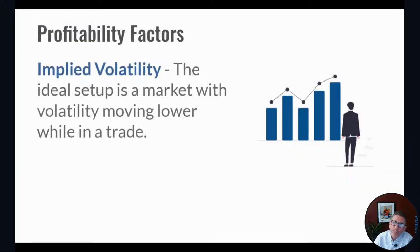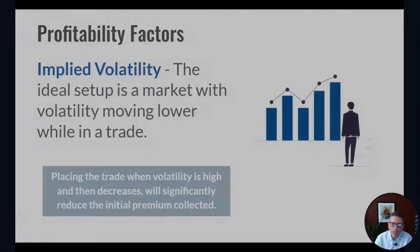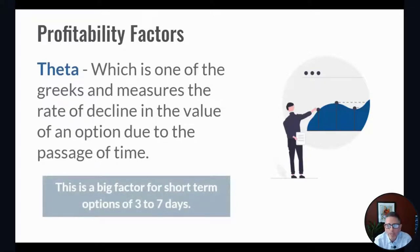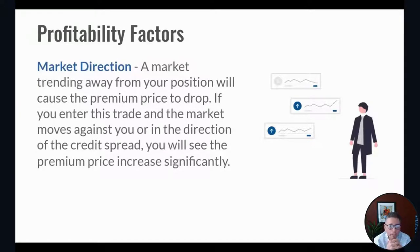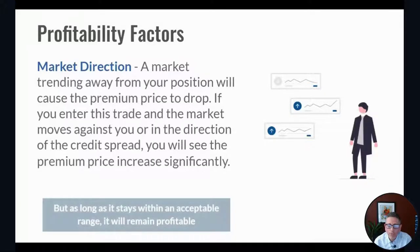Profitability factors: first, implied volatility — the ideal setup is with volatility moving lower while in the trade. Getting in at high volatility that then decreases will significantly reduce the initial premium collected, meaning you profit much quicker. Number two is theta — the rate of change — a big factor especially for short-term options. Number three is market direction. With a bear spread you want the market to go down; with a bull spread you want it to go up. Selling options gives you enough latitude so you don't have to be exactly right.